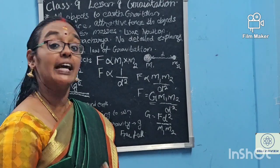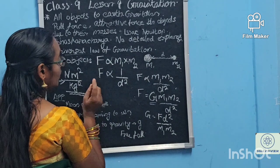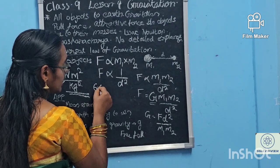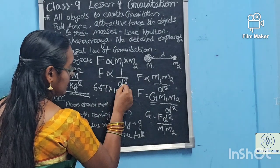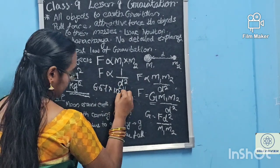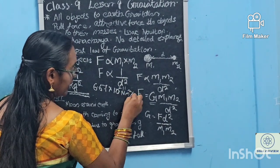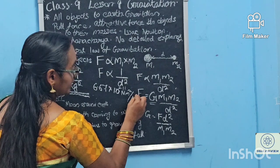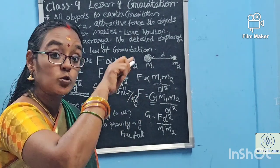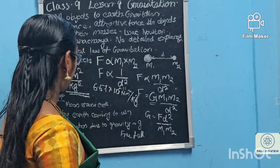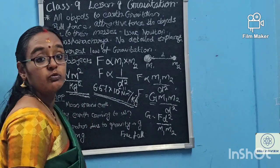The value of G has been calculated as 6.67 × 10⁻¹¹ N·m²/kg², which can also be written as N·m²·kg⁻². This is the value of G.